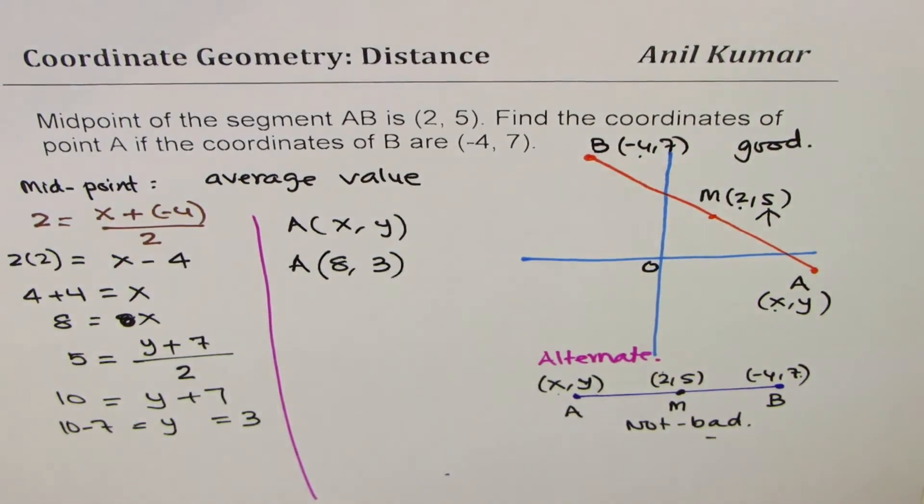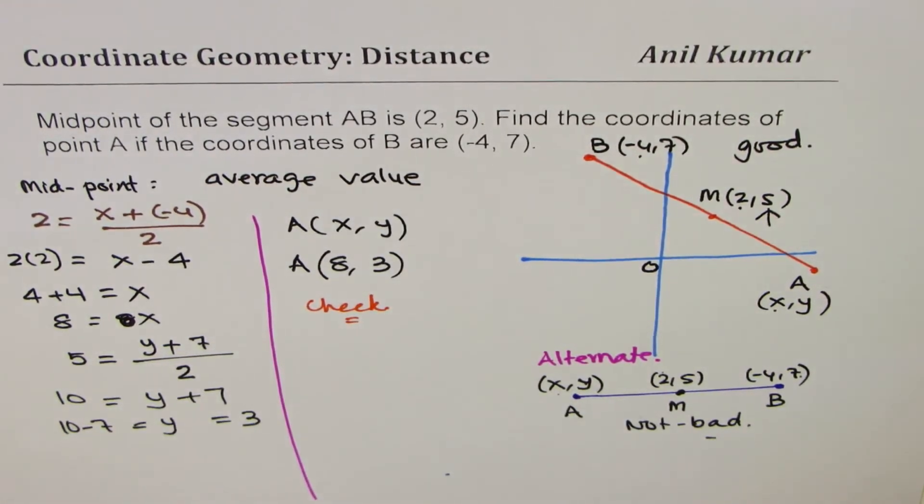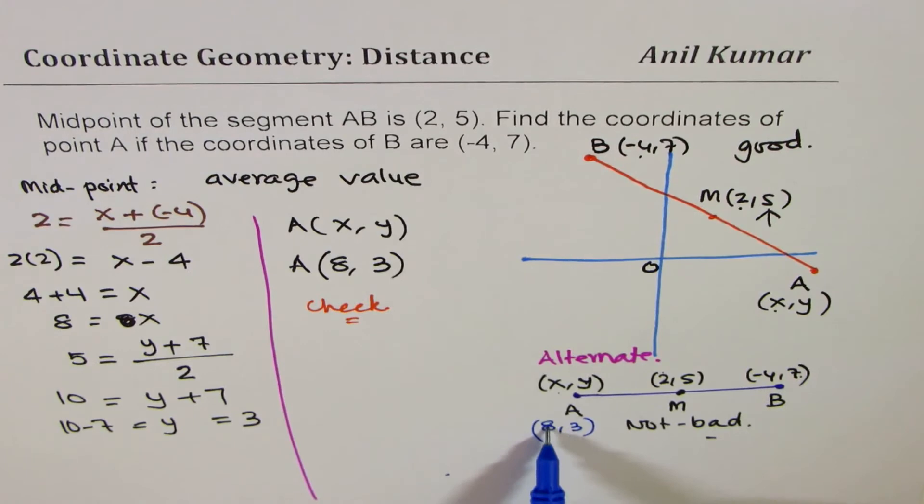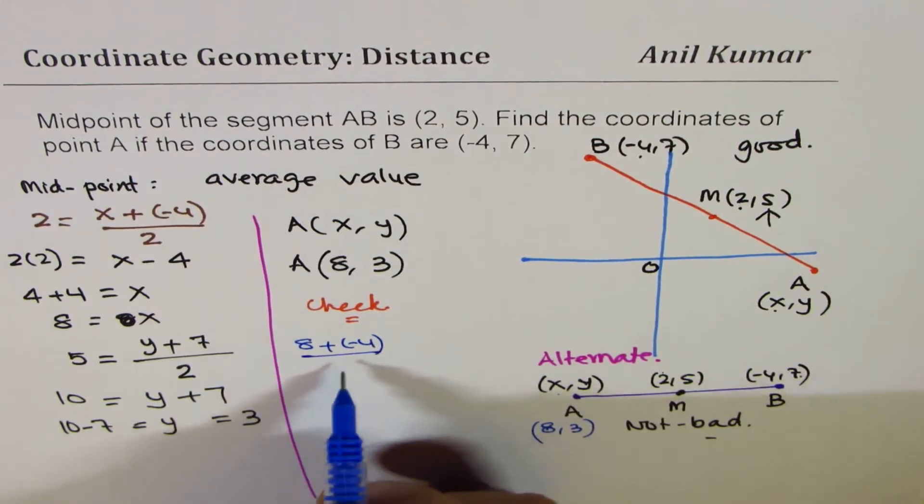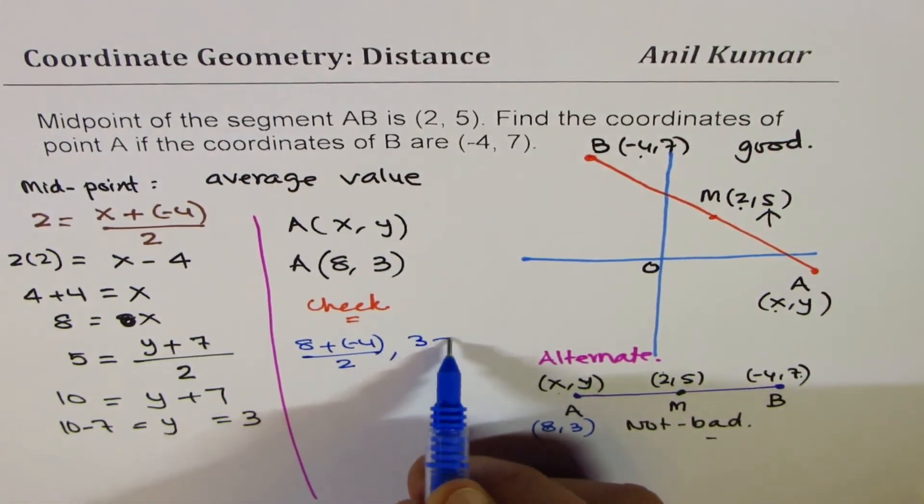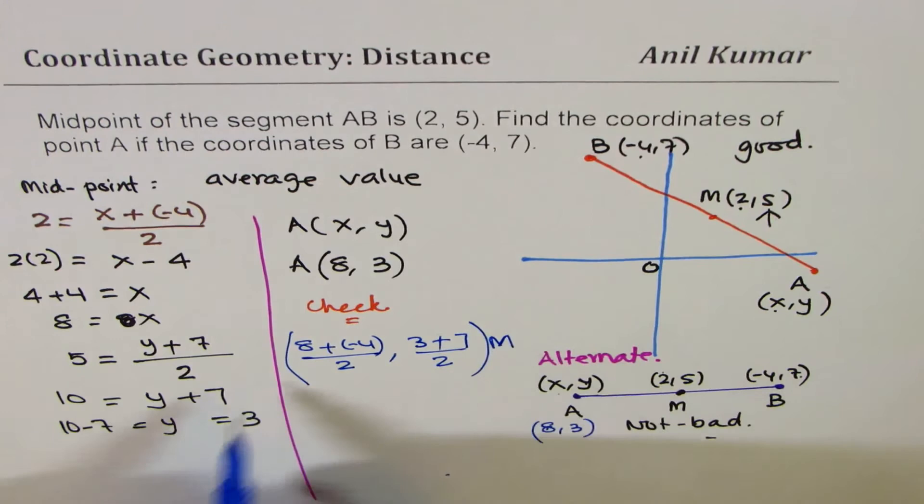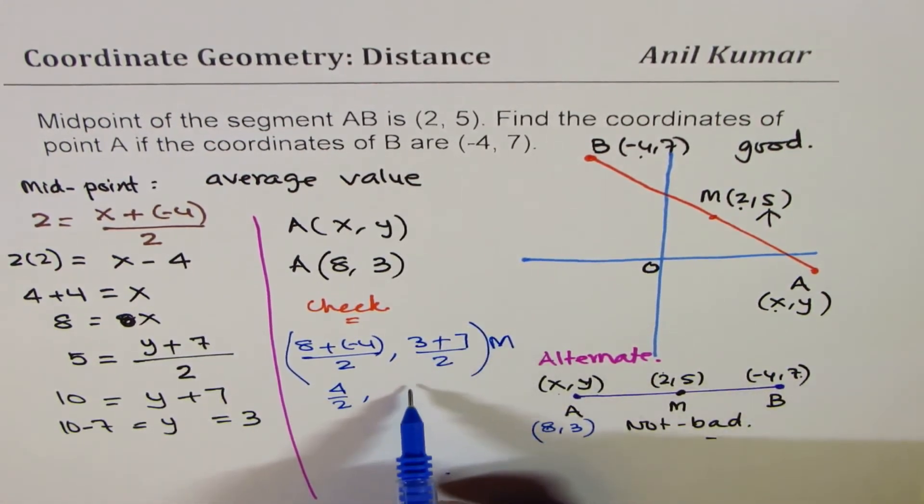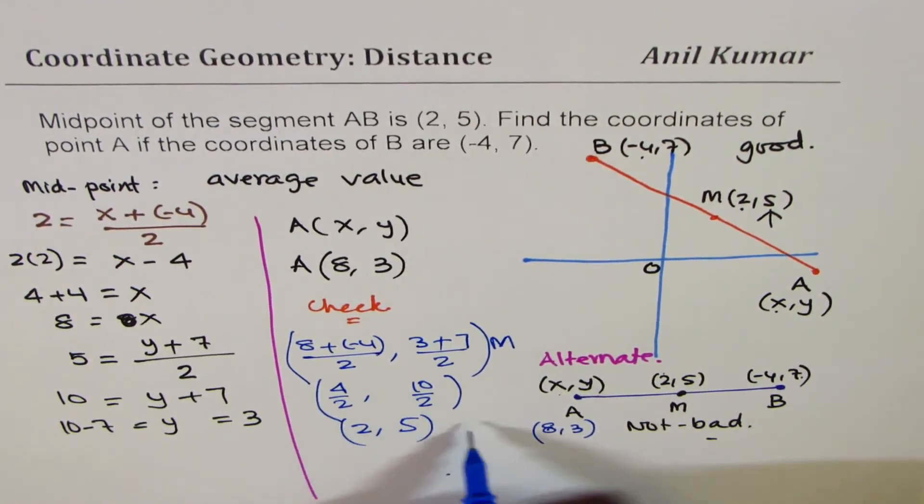What you can do here is, we can check. Check in a way that if I take 8 here, let's check it. If I write 8 and 3, then add them and divide by 2. (8 + (-4)) divided by 2 should be the y value for the midpoint. And this is 4 over 2, and that is 10 over 2. And we do get (2, 5). So it is correct.